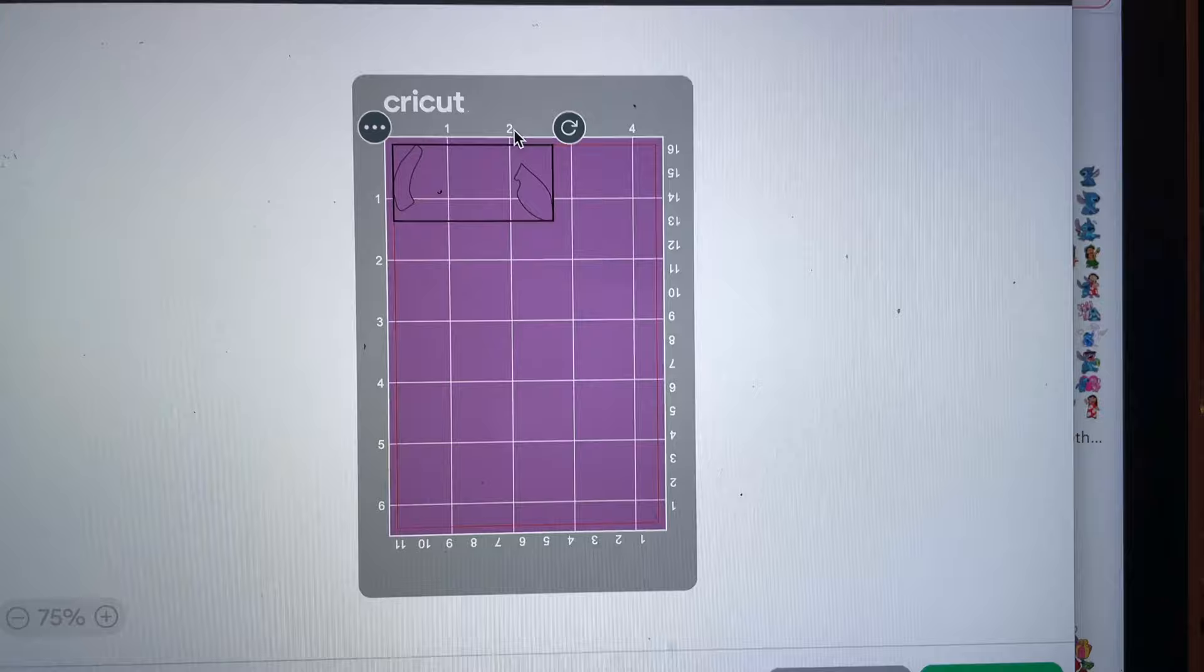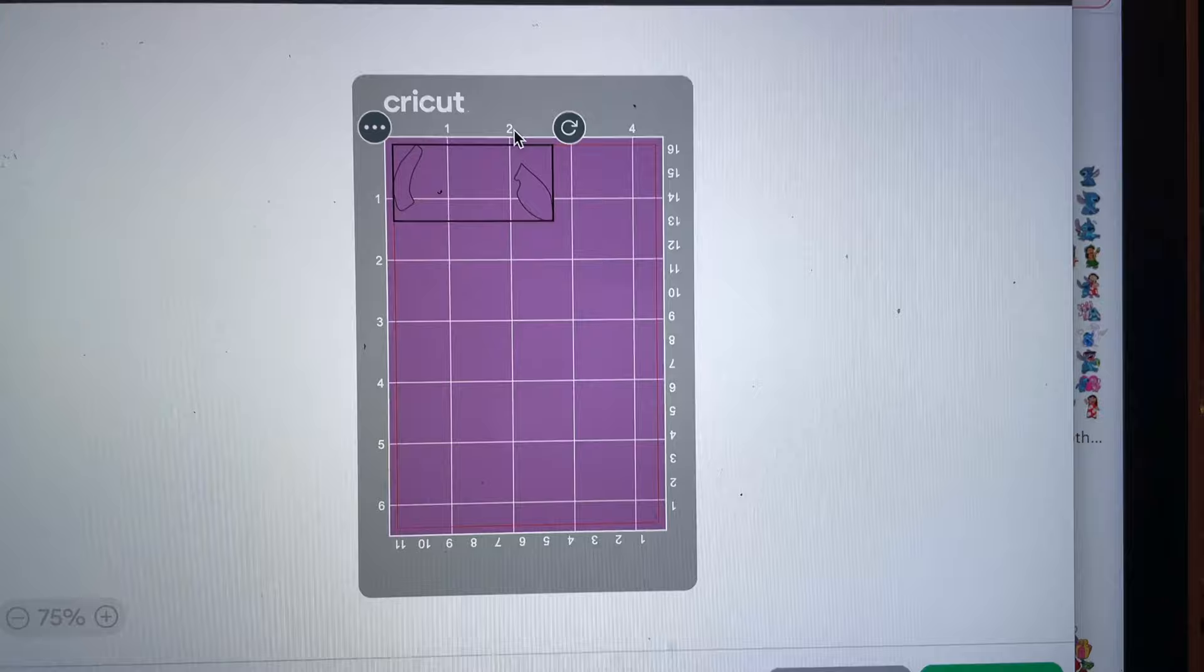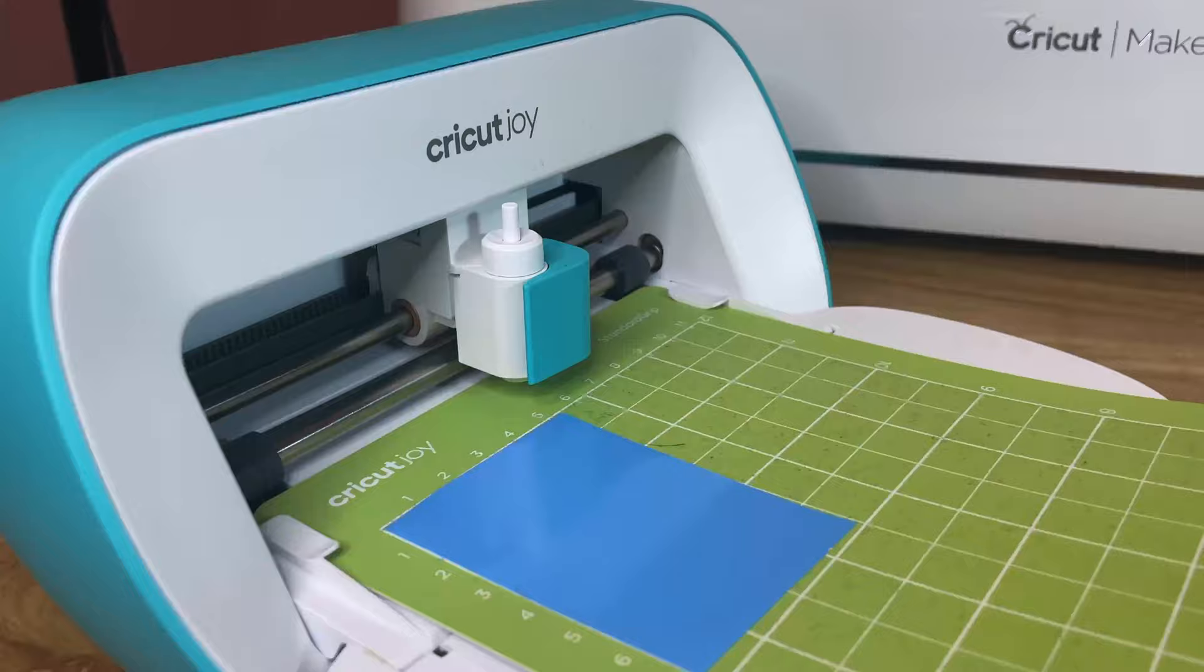When it's finally time to cut, you can see on the left-hand side that it is split up by its colors. And you just cut out the size of the vinyl that you need and line it up with your mat.